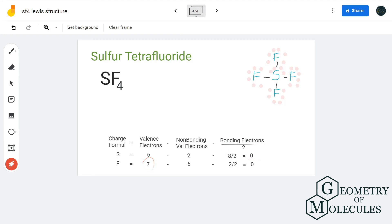For fluorine, we have seven valence electrons, out of which six are non-bonding and two are bonding, which gives us a formal charge of zero. So as the charges on all atoms are zero, this is the most stable structure for sulfur tetrafluoride.